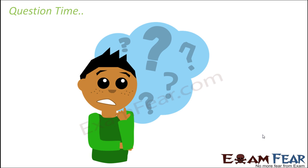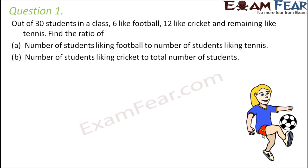So based on whatever we have learnt about ratios, let's look at some of the questions. Question number 1: Out of 30 students in a class, 6 like football, 12 like cricket and remaining like tennis.